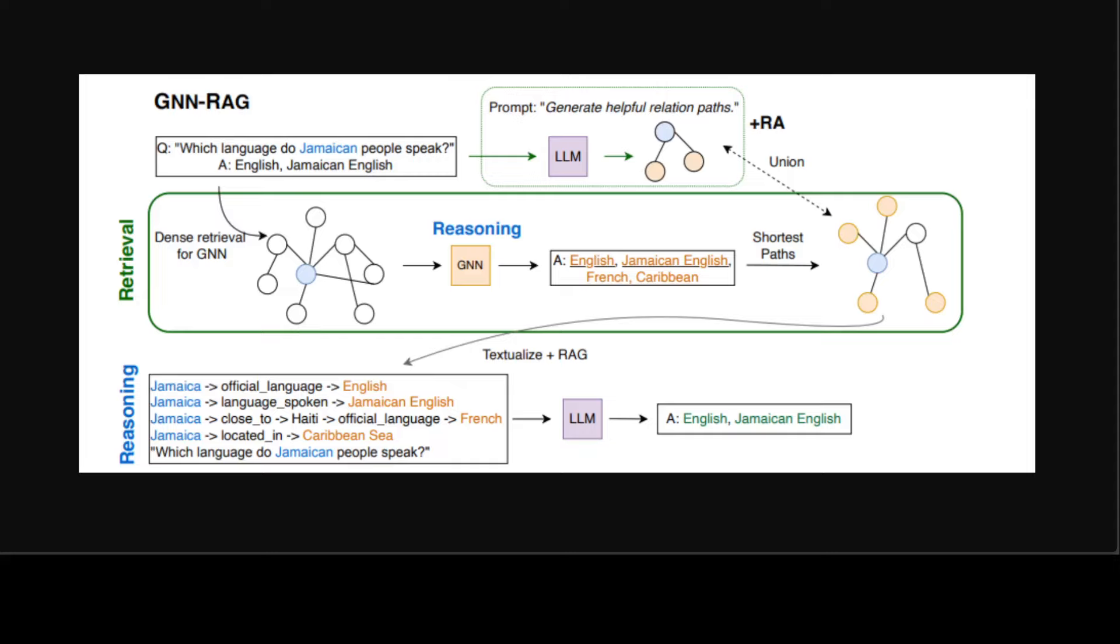GNN-RAG is repurposing GNNs for KGQA retrieval to enhance the reasoning abilities of LLM. And in this framework, the GNN acts as a dense subgraph reasoner to extract useful information, while the LLM leverages its natural language processing abilities for ultimate KGQA.